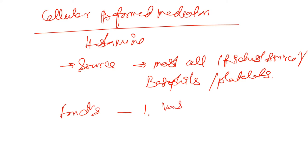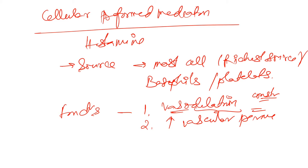Number one, it causes vasodilation. Vasodilation means dilation of the venules, larger in size. Then increased vascular permeability. Vessels' dilation, increase in vascular permeability. Number three is itching. And number four is bronchospasm.